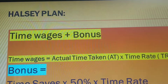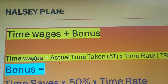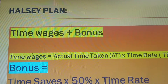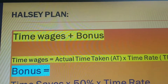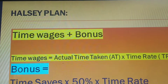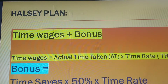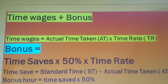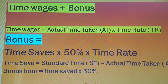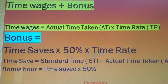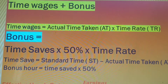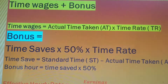In the bonus plan, we calculate wages of a worker as follows: first we calculate time wages — that is actual time taken by the worker multiplied by the time rate, as we learnt in our previous class. We then add bonus to these time wages. In the Halsey Plan, the bonus formula is: time saved multiplied by 50% multiplied by time rate. This means if a worker saves time, he gets bonus on 50% of that time saved, and the other 50% is taken by the proprietor.